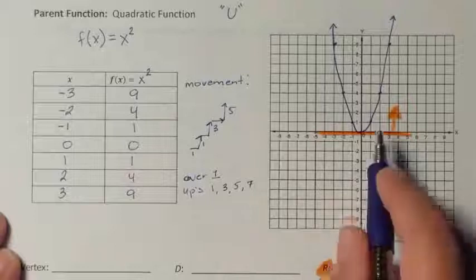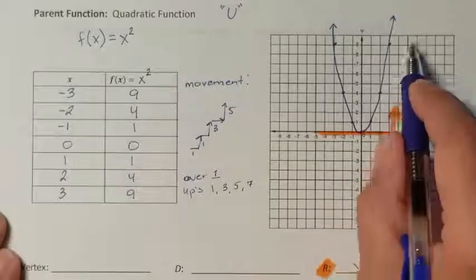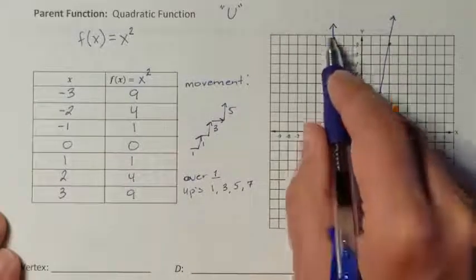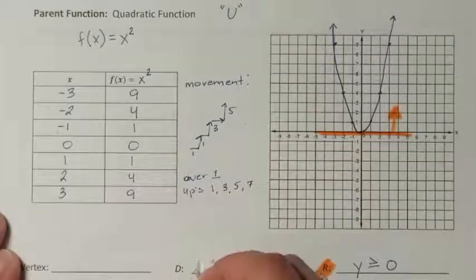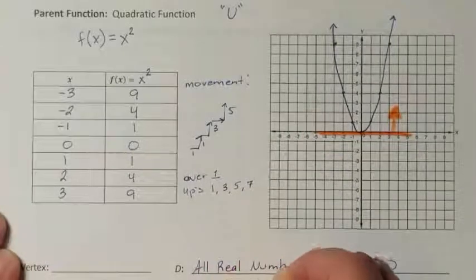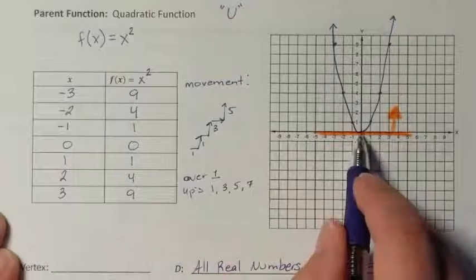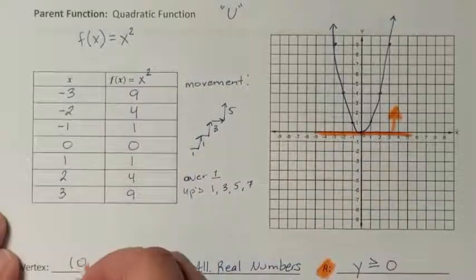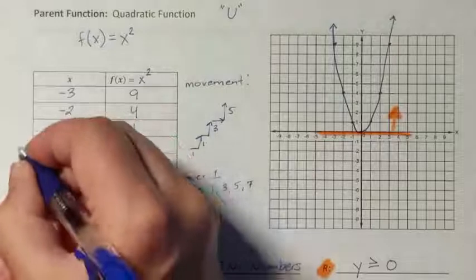The domain, I saw that it went forever in the right direction, and forever in the left direction, which meant my domain was going to be all real numbers. And I notice my vertex, the turning point, is right here at the coordinate point 0, 0. This is my vertex.